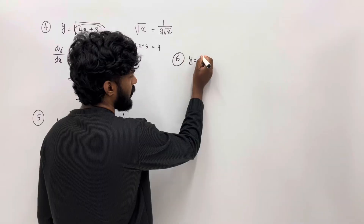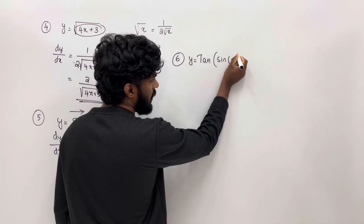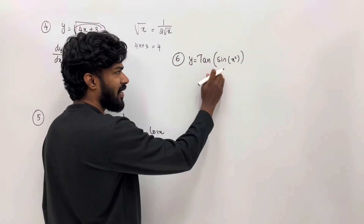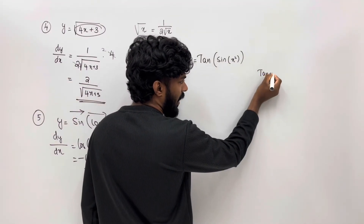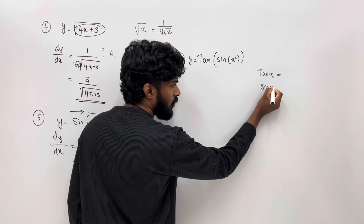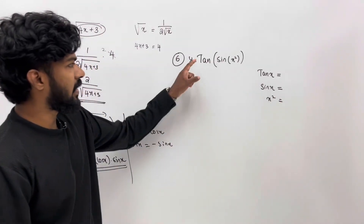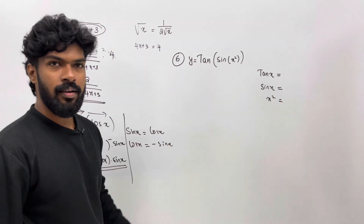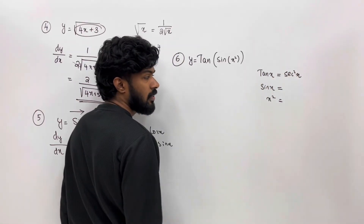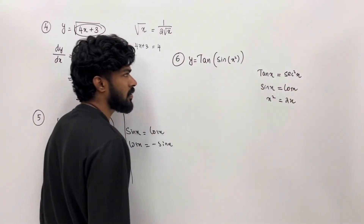tan(sin(x²)). Any function here? 3 is not a function. tan x is one function, sin x is another function, x² is another function. This is 3 functions: tan, sin, x². The derivative of tan x is sec²(x). The derivative of sin x is cos x. The derivative of x² is 2x.